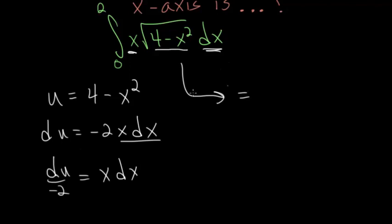Rewriting this integral, we'll have to change the bounds. When x equals 0, we can plug that in and figure out what u would equal. For x equals 0, u would just be 4. When we plug in the upper bound for x, we get 4 minus 2 squared, or 4 minus 4, which is 0.